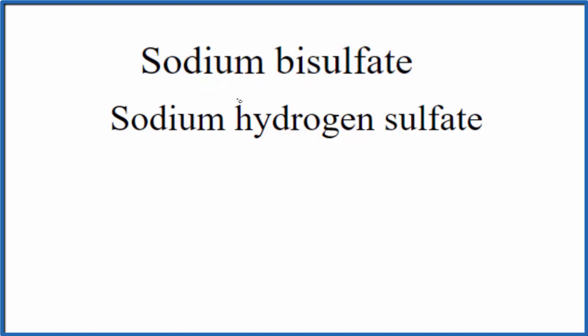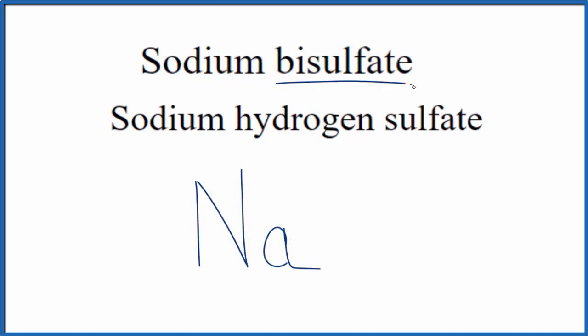When we look at this, we see sodium — that's just Na. But the bisulfate, or the hydrogen sulfate, you won't find those on the periodic table. These are polyatomic ions.